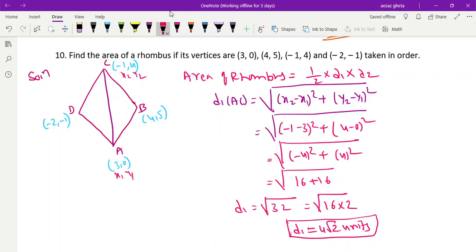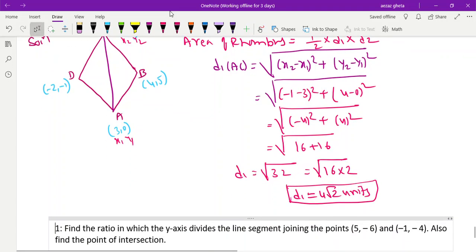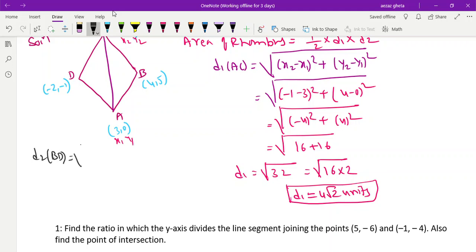Understood. Now you have to find out d₂. For d₂, we need to find out BD. √[(x₂ - x₁)² + (y₂ - y₁)²]. This is x₁, y₁, x₂, y₂. x₂ - x₁ is -2 - 4 = -6, -1 - 5 = -6.